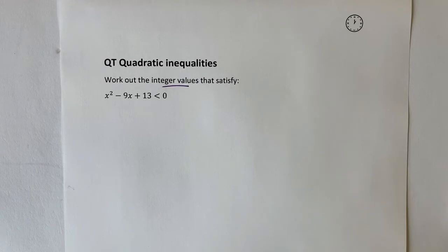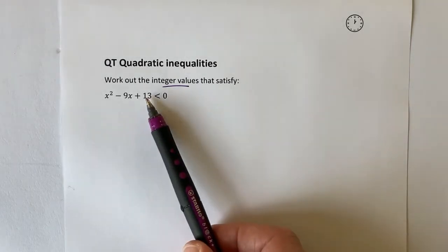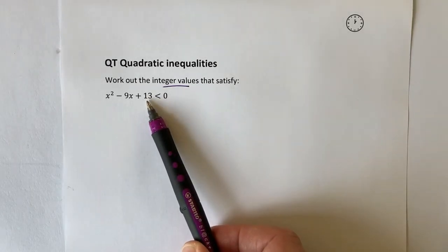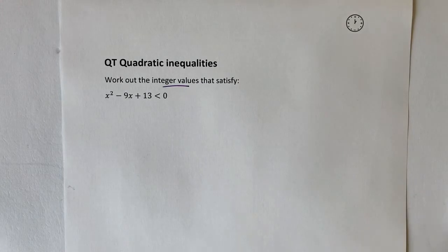If we have a look at this briefly, I can see that I've got positive 13. The two factors of positive 13 are 13 and 1, and I can't add those together to make minus 9. Therefore, I'm going to use the quadratic formula.